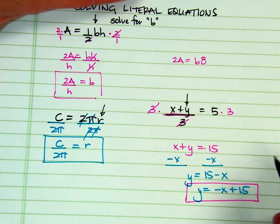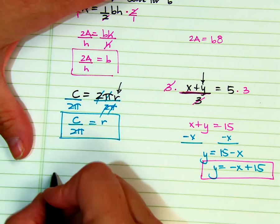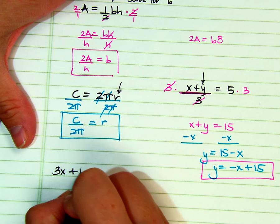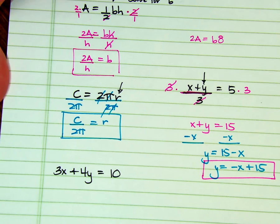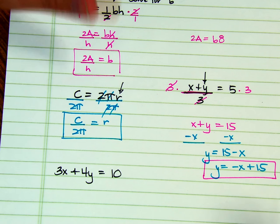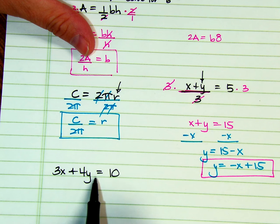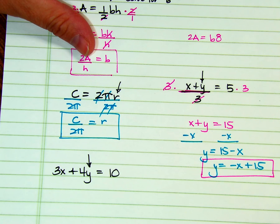So let's do 3X plus 4Y equals 10. When you get into solving and graphing linear equations, this is called standard form because the X and the Y are on the same side. But typically we would solve for Y. Let's go ahead and do that.